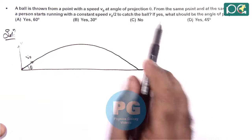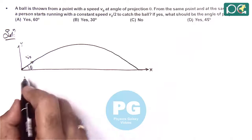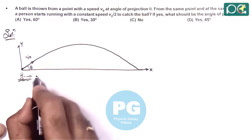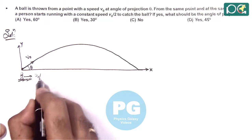Now at the same point, at the same instant, a person starts running on ground with the speed V-naught by 2 to catch it.